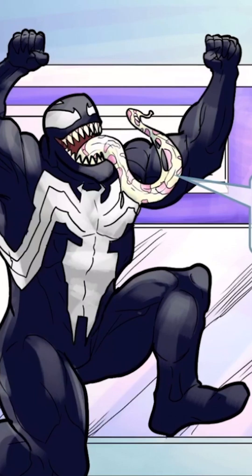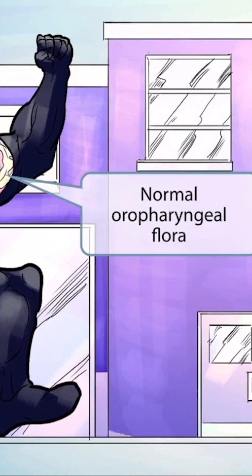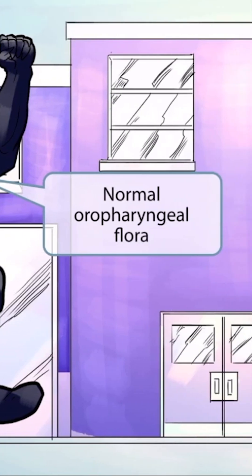Notice that this character has a very long and gross-looking tongue. His mouth is also wide open, as if he's ready to eat someone or something. His big tongue and open mouth should help you remember that Viridans streptococci are part of the normal oropharyngeal flora.